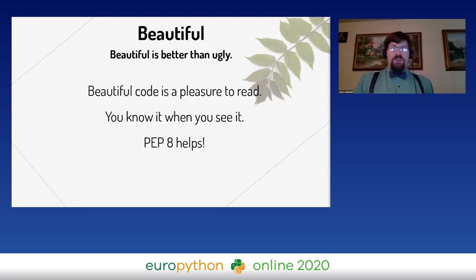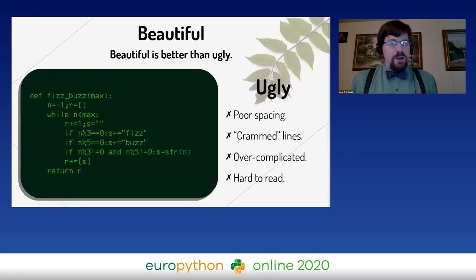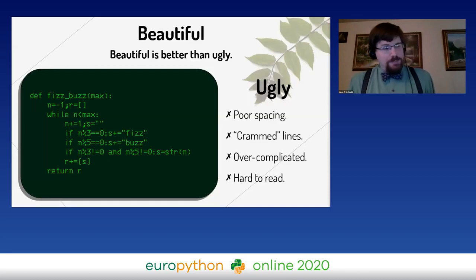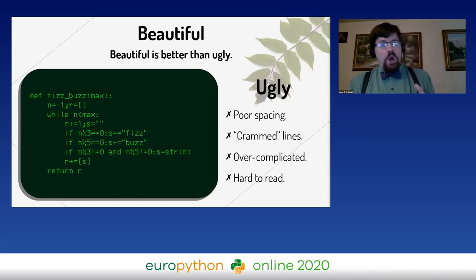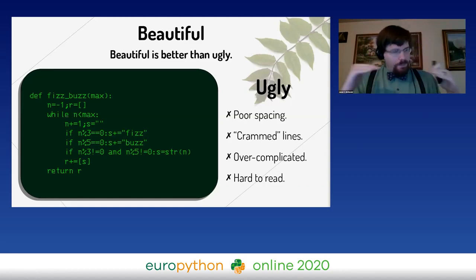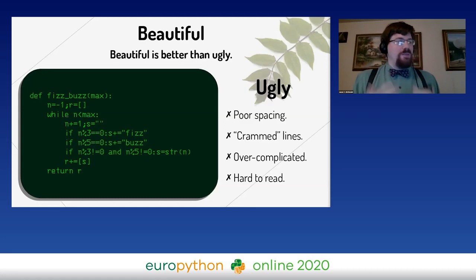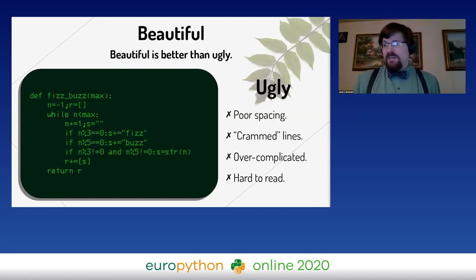This makes the most sense with some actual code. Here's some ugly code — I take full responsibility for writing this monstrosity. Problems include poor spacing, lines crammed together, multiple statements on one line, defining variables on the same line. The conditional header and suite are on the same line. This is just nasty. It's overcomplicated, hard to read, and I'm not using any of Python's particular abilities — I'm essentially writing C code in Python.